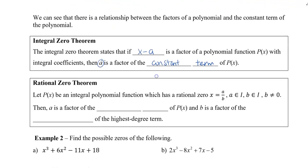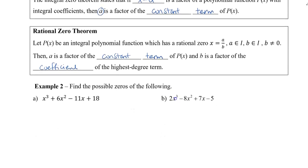Now I'm going to extend this to the Rational Zero Theorem. Let p of x be an integral polynomial function which has a rational zero — meaning a rational number, not necessarily an integer — where that zero is x equals a over b. Here a and b are integers, but b can't be zero. Then a, the numerator, is a factor of the constant term of p of x, and b is a factor of the coefficient of the highest degree term. Let's take a look at a couple of examples.